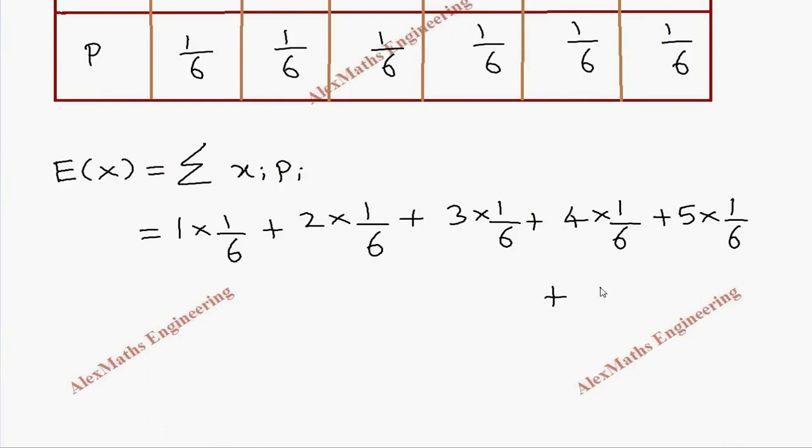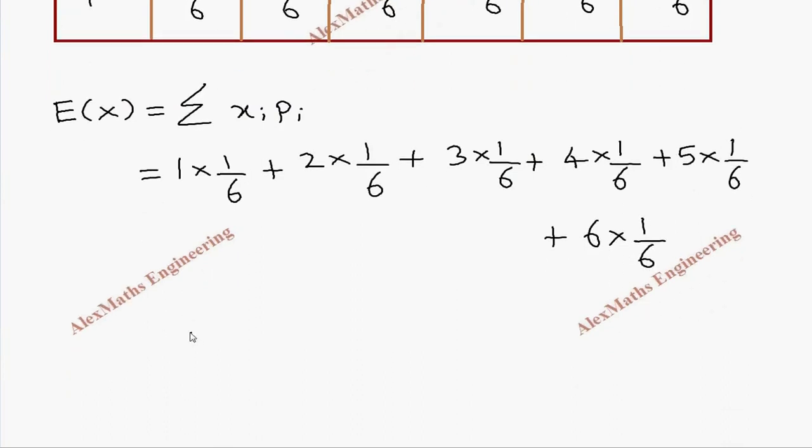Then 4 into 1 by 6 plus 5 into 1 by 6. The last value is plus 6 into 1 by 6. No need to cancel anything because we have the common denominator 6. In the numerator, it is 1 plus 2 plus 3 plus 4 plus 5 plus 6. By adding everything, we get 21 by 6. After cancelling with 3 table, it is 7 by 2. So we completed the first part.